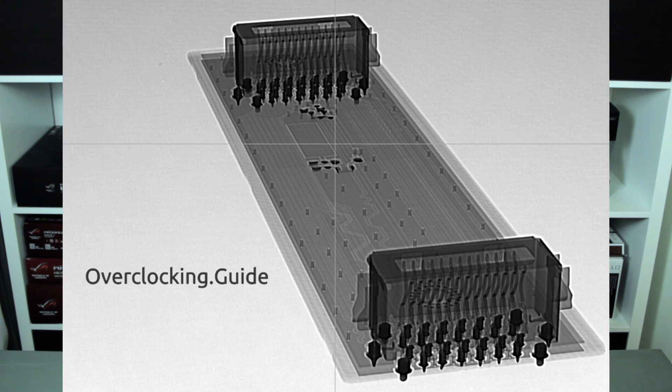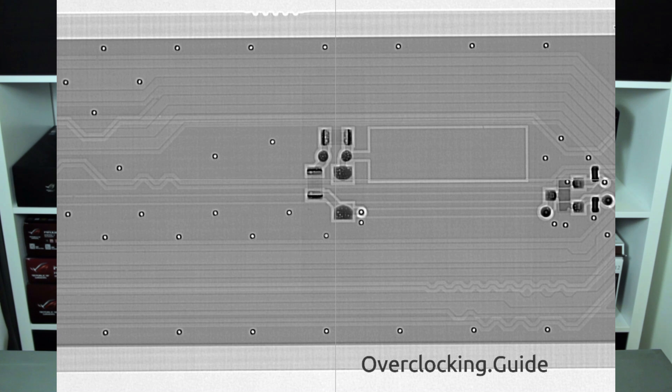Why is equal trace length necessary? At high frequencies it becomes more important that data packages arrive at the same time. If traces have different lengths, the packages arrive at different times; if they all have the same length, they arrive simultaneously. So whenever you increase the frequency, it becomes more critical that packages arrive at the same time. Looking at the middle of the SLI bridge, you can see more of those trace-length adjustments, and also the components responsible for the LED. So this bridge is better than the older flexible bridge because it has matched trace lengths — but actually, that's all NVIDIA did.